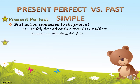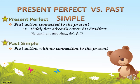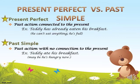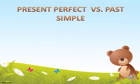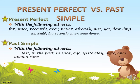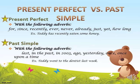The present perfect is used with: for, since, recently, ever, never, already, just, yet, how long — for example: Daddy has recently eaten some honey. The past simple is used with: last, in the past, in plus a year, ago, yesterday, once, once upon a time — for example: Daddy went to the dentist last week.